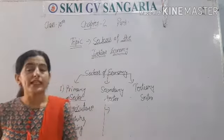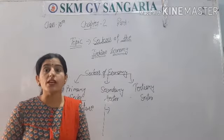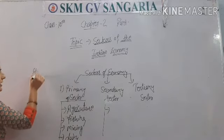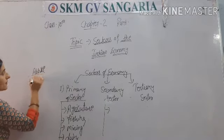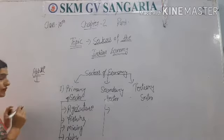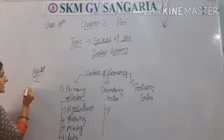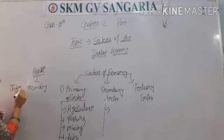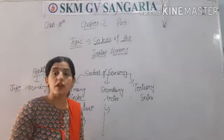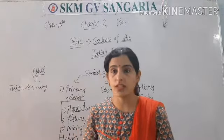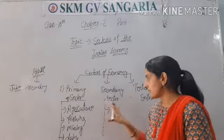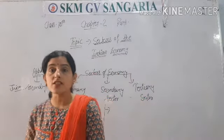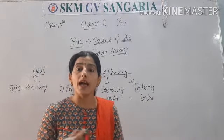Secondary sector is that sector in which goods are manufactured. For example, an apple is grown in the primary sector. And if we need juice of apple, then that juice is manufactured in the secondary sector. So the making of juice will be included in the secondary sector. Basically, the secondary sector takes raw material from the primary sector and converts these raw materials into any other product.